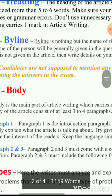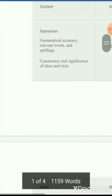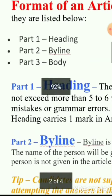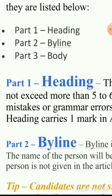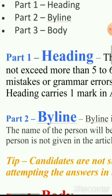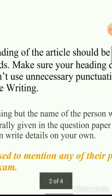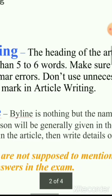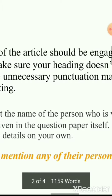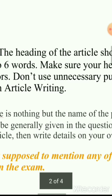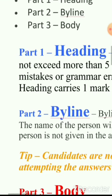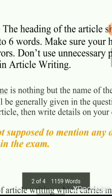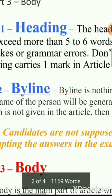The format of an article is divided into three main parts: heading, byline, and body. The heading should be engaging and should not exceed five to six words. Make sure the heading is not a full sentence, has no spelling mistakes or grammatical errors, and avoid unnecessary punctuation marks. The heading carries one mark in article writing.